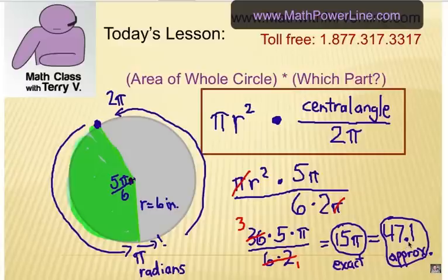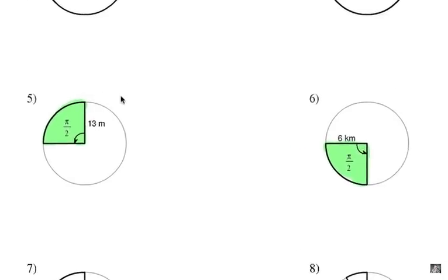Alright, I'm going to work through two examples with you. Let's look at number 5. We're looking for this area of the circle, and the central angle is pi over 2, which is actually 1 fourth of the circle, isn't it? The radius is 13 meters. So, what's the area of the sector?